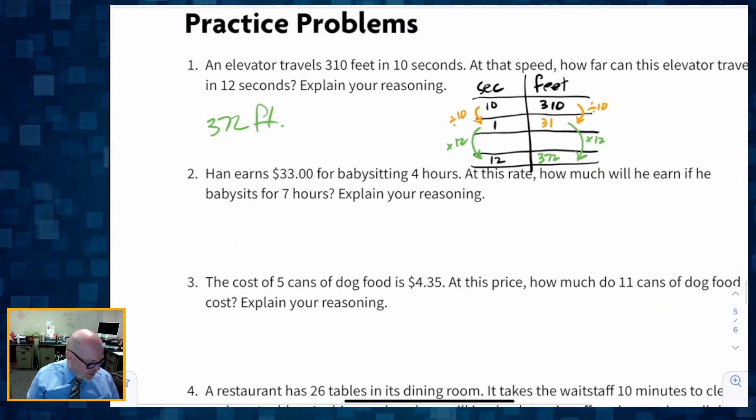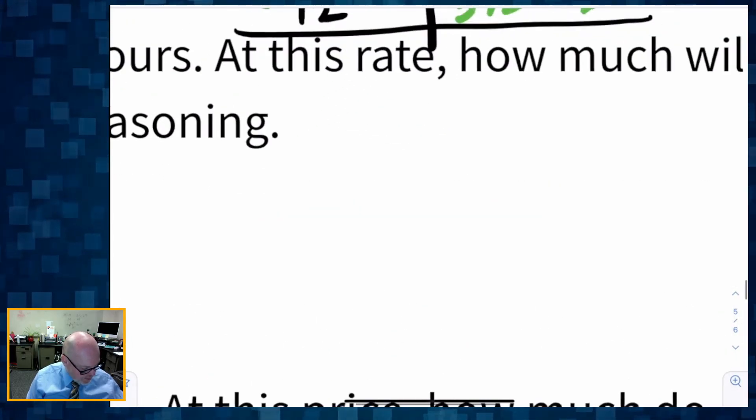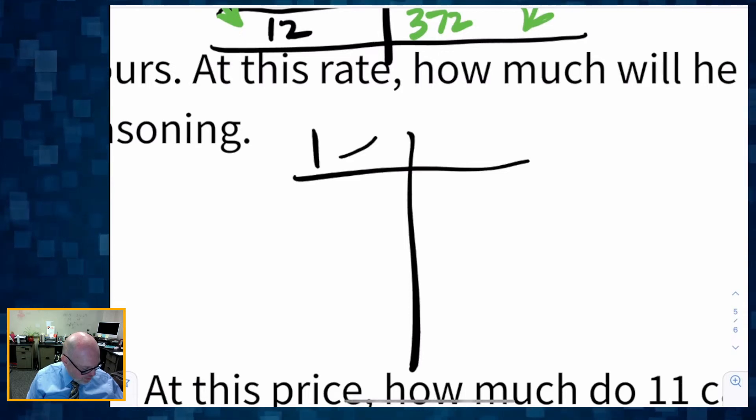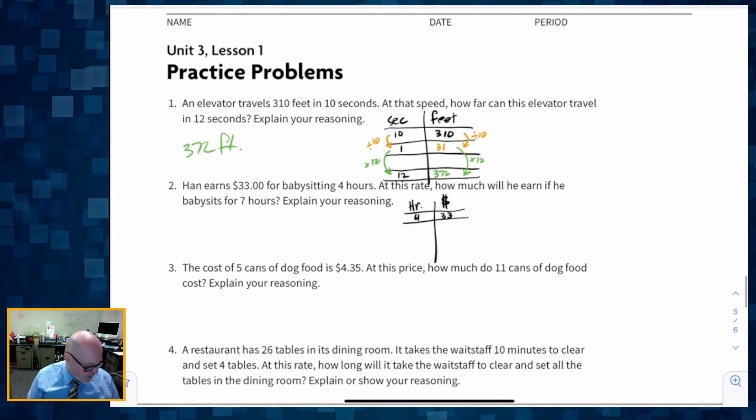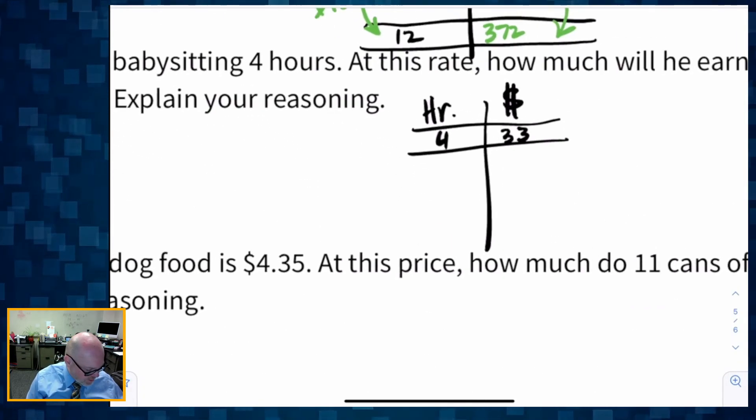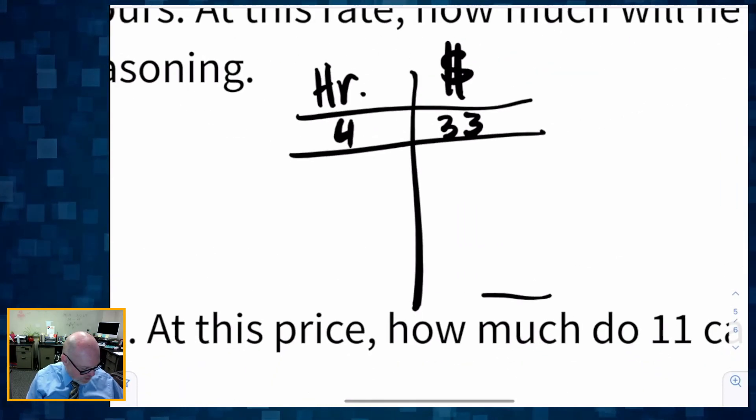Hans earns $33 for babysitting four hours. At this rate, how much will he earn if he babysits for seven hours? Explain your reasons. So again, we have that rate of $33 is four hours. So let's do that. So hours and dollars. And I think the rate was four hours is $33. Four hours is $33. And we want to know seven hours. So what is that going to look like? I want to know seven hours.